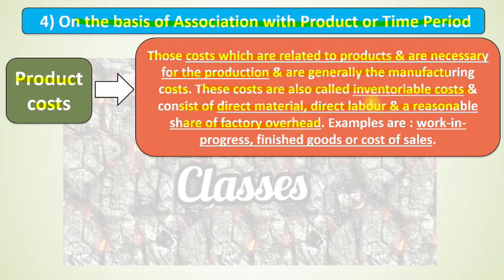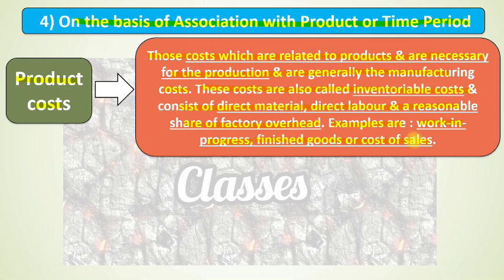Product cost can also be called inventoriable cost. It includes direct material, direct labor, and factory overhead costs. Examples of product cost include work-in-progress, finished goods, and cost of sales. In short, all costs incurred in manufacturing a product are product costs, also known as inventoriable costs.